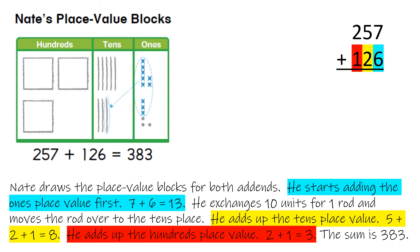So this is Nate's place value blocks. Nate draws the place value blocks for both addends. So here is 257, and on the bottom is 126. He starts adding the ones place value first. So 7 plus 6 equals 13.